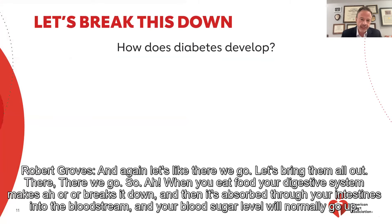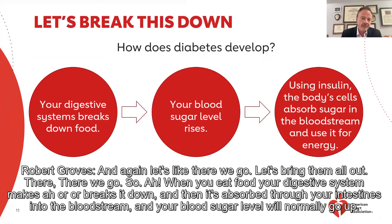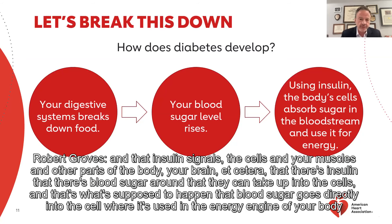So how does diabetes develop? When you eat food, your digestive system breaks it down and then it's absorbed through your intestines into the bloodstream, and your blood sugar level will normally go up. But what's supposed to happen when your blood sugar goes up is insulin is released from the pancreas. That insulin signals the cells in your muscles and other parts of the body — your brain, etc. — that there's blood sugar around that they can take up into the cells.